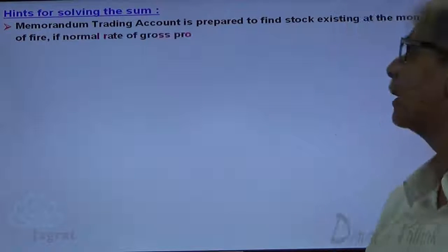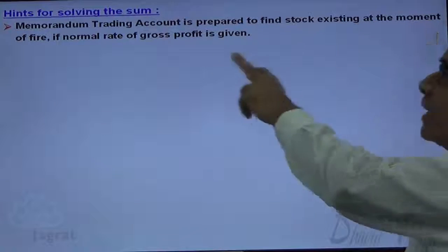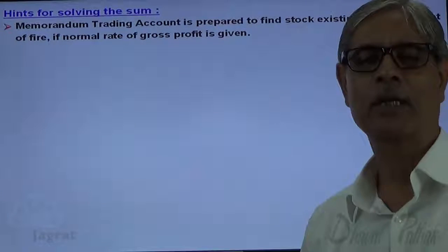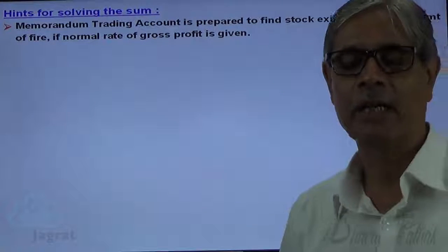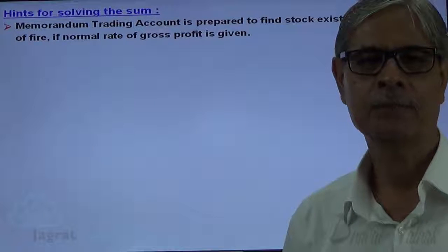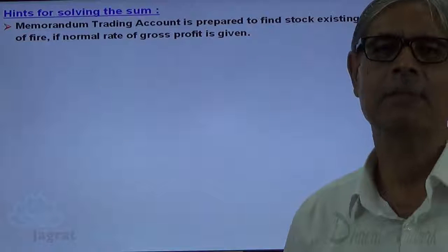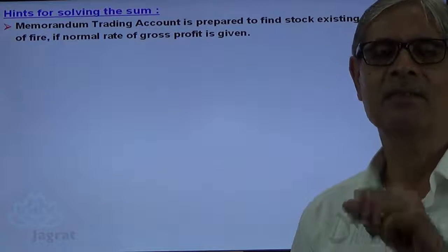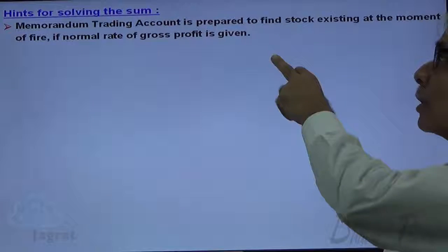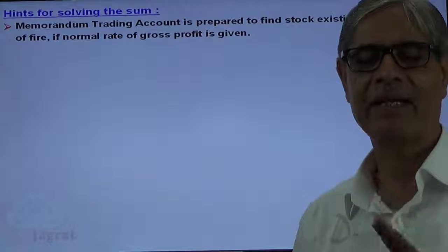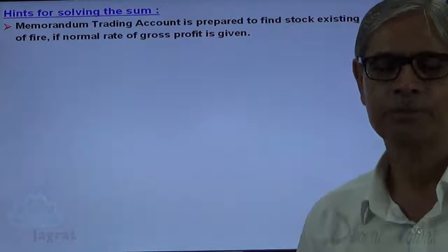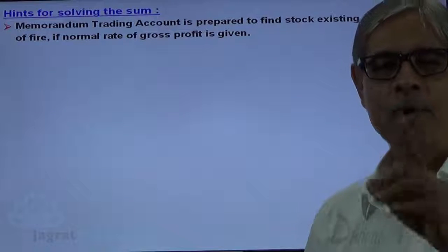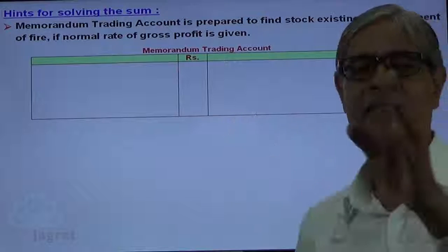This memoranda trading account is prepared to find out the stock that existed at the moment of fire, if the normal rate of gross profit is given. Generally a trading account is prepared to find out the gross profit, but here the normal rate of gross profit is available to you on the basis of past experience or on the basis of the consistent policy of the businessman. So the gross profit is available in this trading account. This memoranda trading account is prepared with the purpose of finding out the stock that existed at the moment of fire — that is, the closing stock on the date of fire. It is prepared exactly like a trading account.